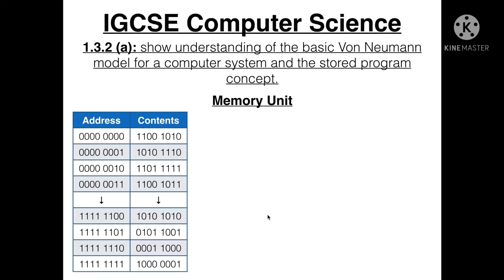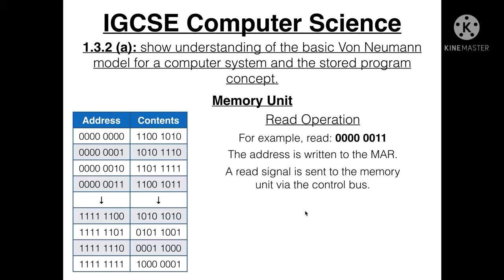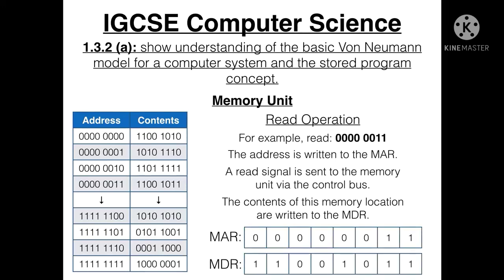Let's look at the read operation. If we want to read the contents of a memory location, the address is written to the MAR, a read signal is sent to the memory unit via the control bus, and the contents of that memory location are written to the MDR. So the MAR holds the address and the MDR holds the data at that address.